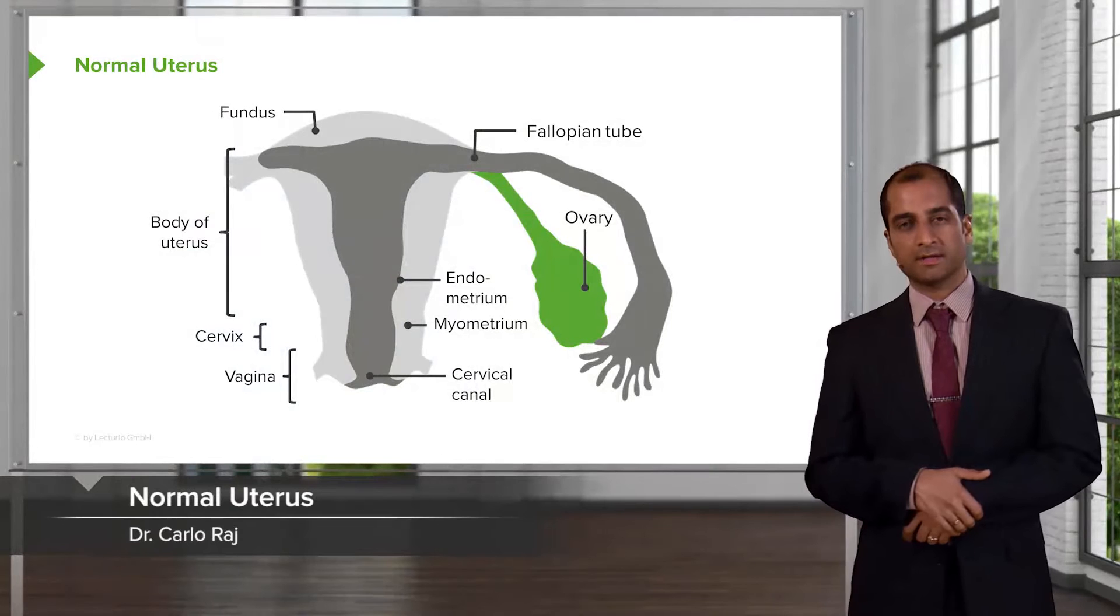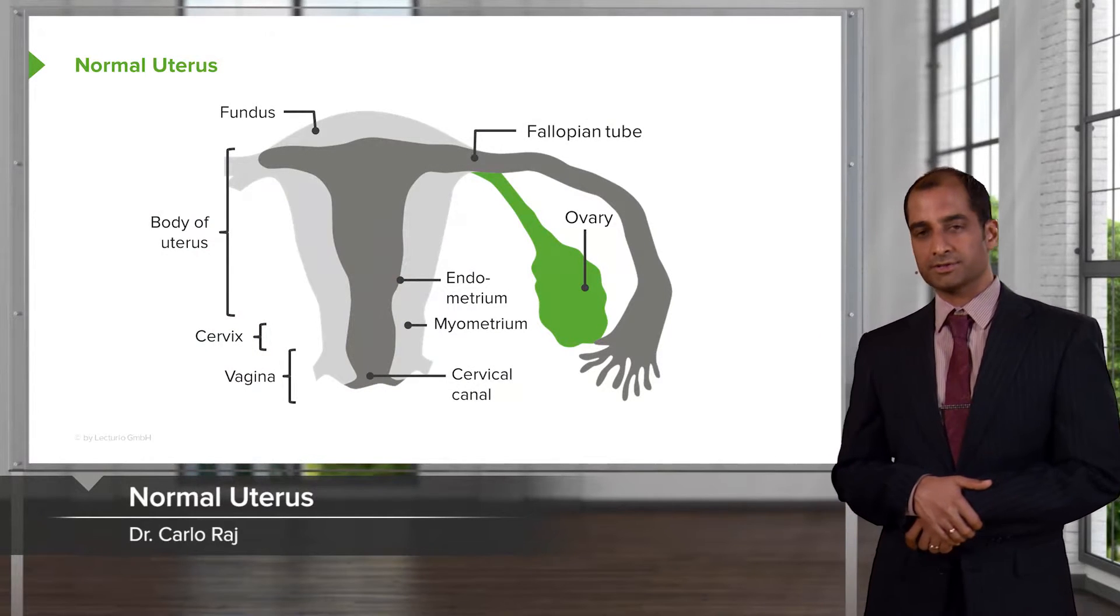In this section, we'll take a look at female reproductive pathology and our focus shall be the uterus. Let's begin with the normal uterus and in this illustration, you'll notice the following.